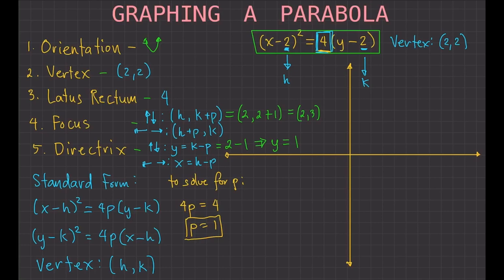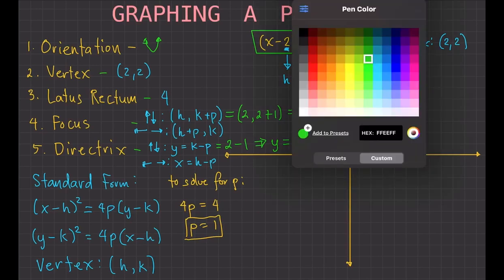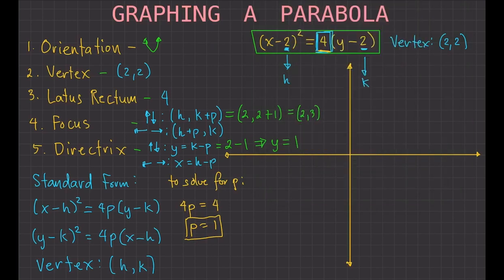We are now ready to graph the parabola. The first thing to plot is the vertex, since it gives us the location. The vertex is (2, 2), and we mark it as V. Next, we plot the focus at (2, 3), marking it as F.